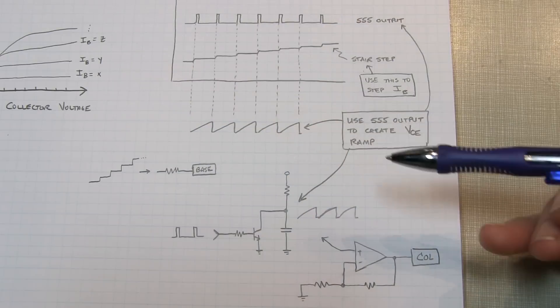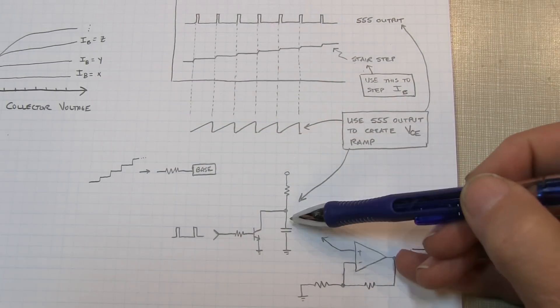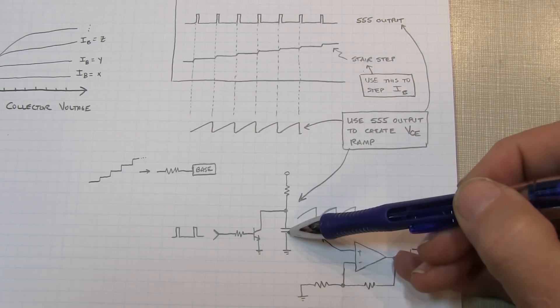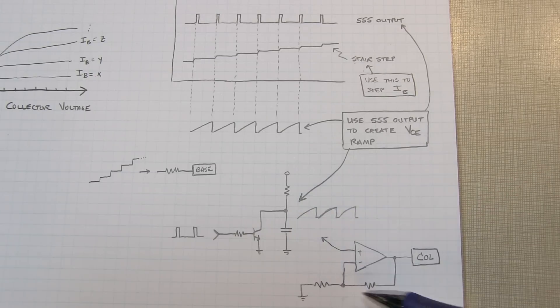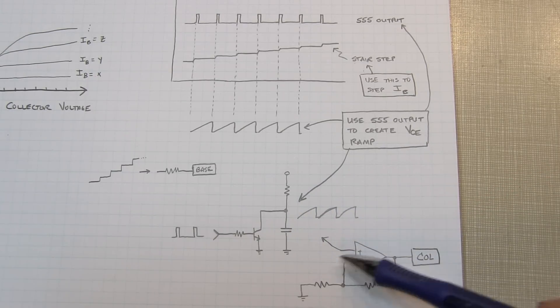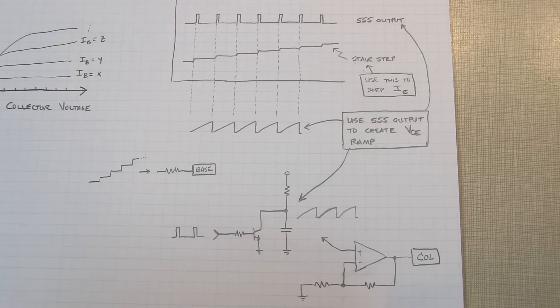As soon as that pulse goes away and the stair step is steady, we've established a new bias current for the transistor, and then we're going to ramp up this voltage on this capacitor. We're going to feed that into a simple non-inverting op amp gain stage to get the voltage swing that we want and to give me a nice low impedance drive.